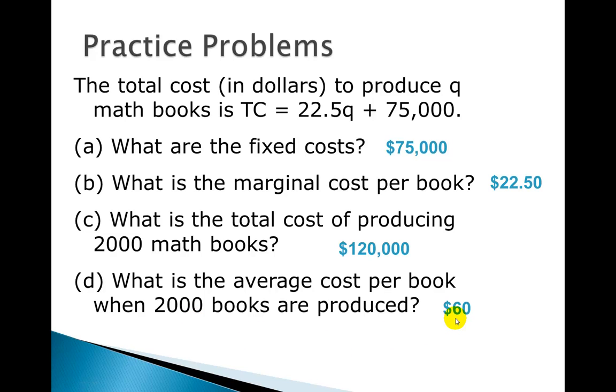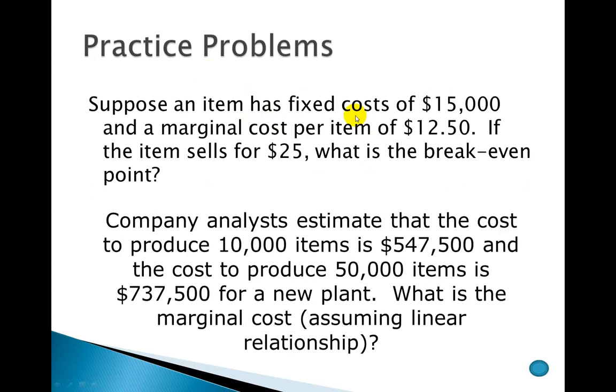So those are just some straightforward business examples and a nice, easy, linear total cost function. So a couple more problems here, these are two different ones. So let's look at the first one, suppose an item has a fixed cost of $15,000 and a marginal cost per item of $12.50. If the item sells for $25, what is the break-even point?